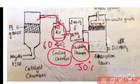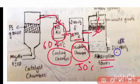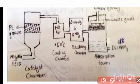This nitrogen dioxide is then passed through an absorption tower where it reacts with water to form diluted HNO₃ — diluted nitric acid.